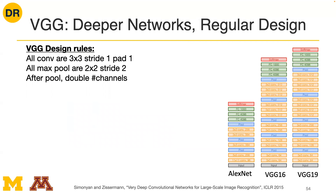VGG's design rules: all convolutional layers are constrained to a 3×3 kernel size with stride 1 and padding 1. All max pool layers have a 2×2 kernel size with stride 2. By constraining the search space to these simple, consistent design rules, VGG achieved strong results while making the architecture much more systematic and principled than previous trial-and-error approaches.